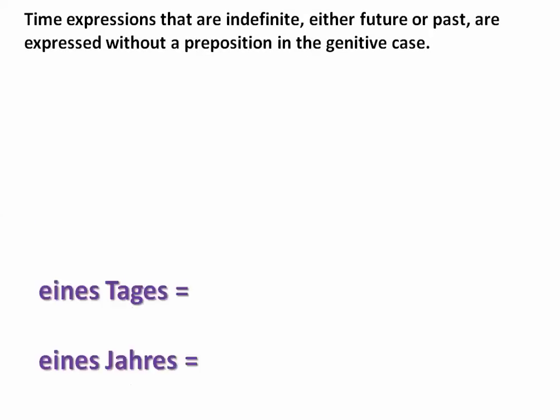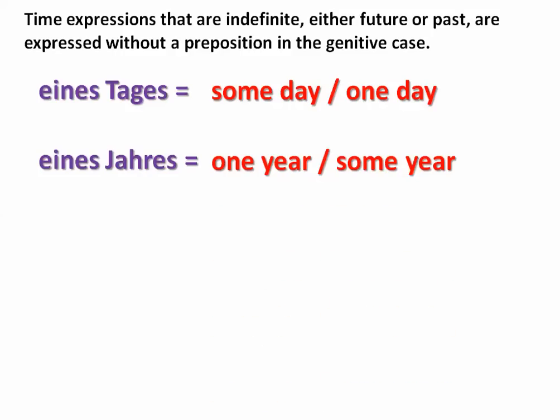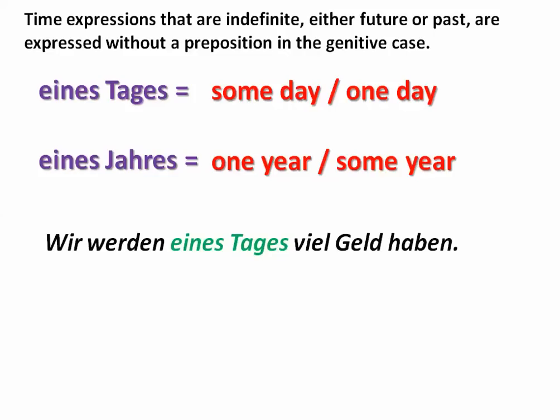Time expressions that are indefinite — either in the future or past — are expressed without a preposition but in the genitive case. The two main examples are 'eines Tages' — one day or some day — and 'eines Jahres' — one year or some year. For example: 'Wir werden eines Tages viel Geld haben' — we will one day have a lot of money.